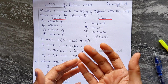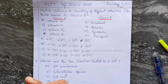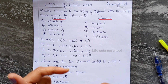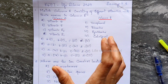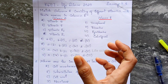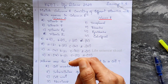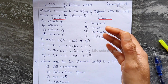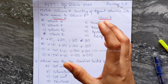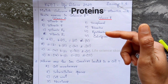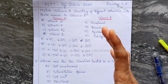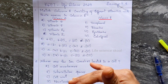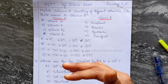We need vitamins so that blood cells will be formed and our immune system will be strong. Vitamins are micronutrients. The function of these micronutrients actually increases the metabolism of macronutrients like proteins, carbohydrates and fats. Vitamins can be divided into two types: water soluble vitamins and fat soluble vitamins.